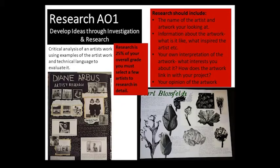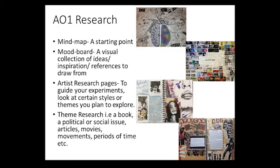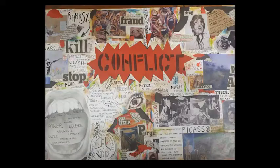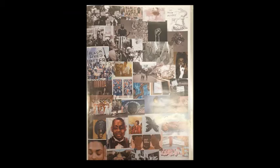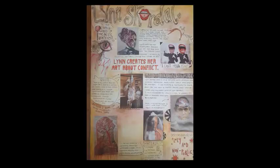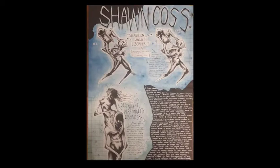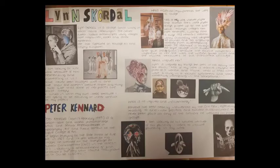You will be assessed on four key areas. AO1 is all about research and the contextual sources that you investigate — developing ideas through investigations and demonstrating critical understanding of sources. You will do this through artist research, analysis of artists' work, mind mapping, mood boards and any other form of research that you undertake.